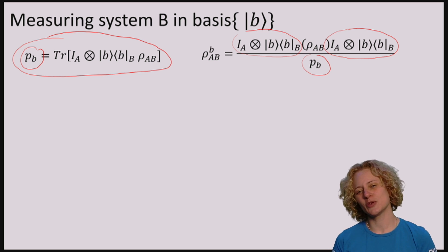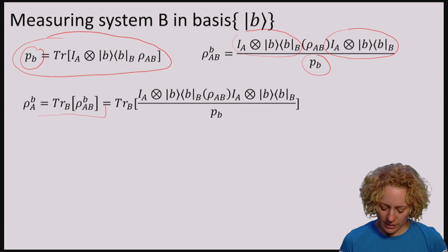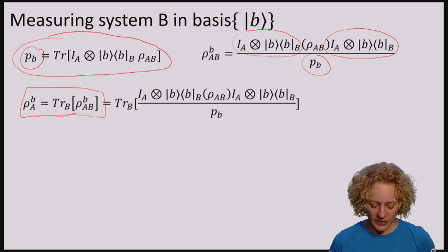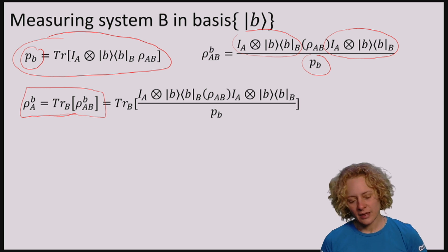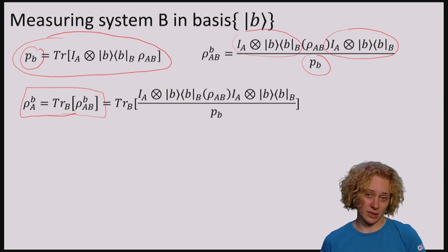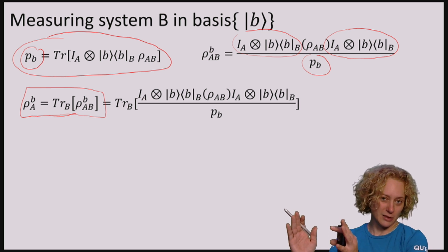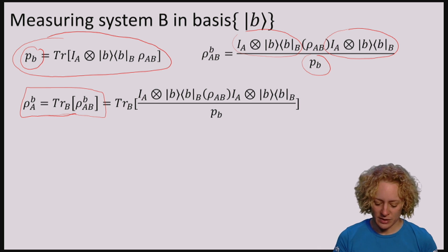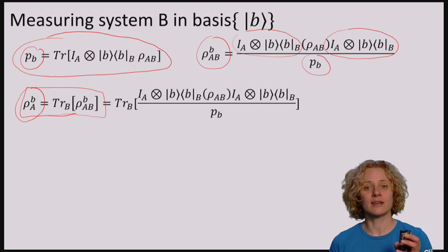So this is the post-measurement state if we measure B and obtain outcome b. I've said that computing the partial trace is like measuring B and forgetting the outcome. And in order to show this, let me now have a look at what is the reduced state on A if we did obtain outcome b. We have a post-measurement state, which is this one, and I'm asking now what is the reduced state on A in this case.